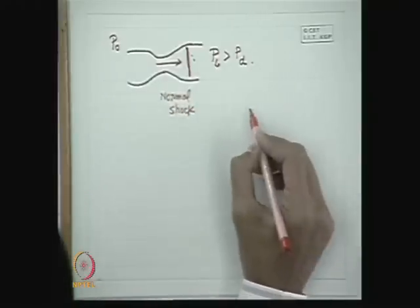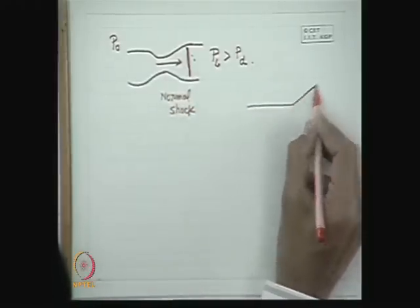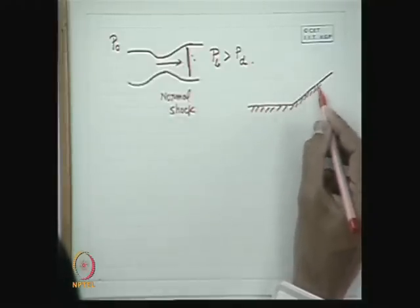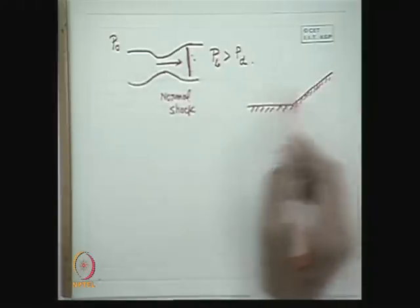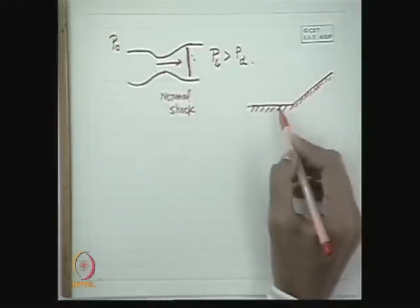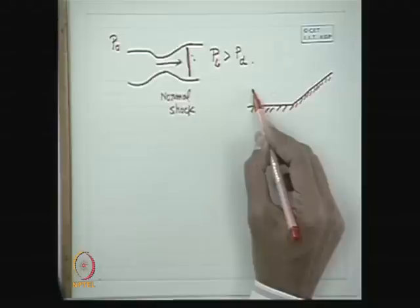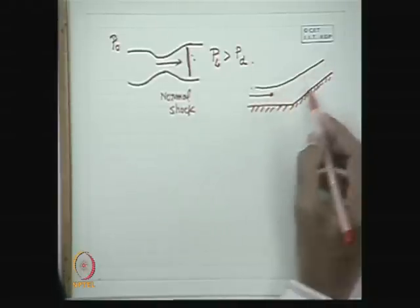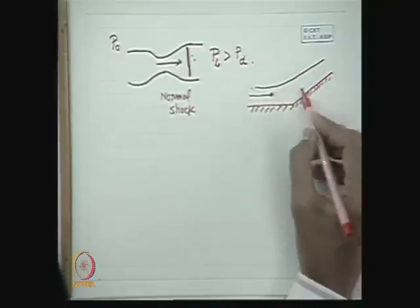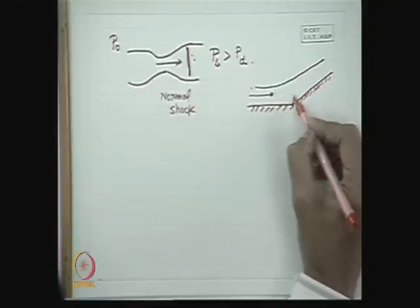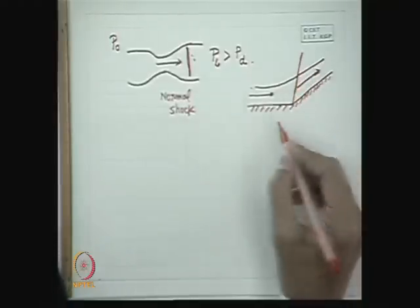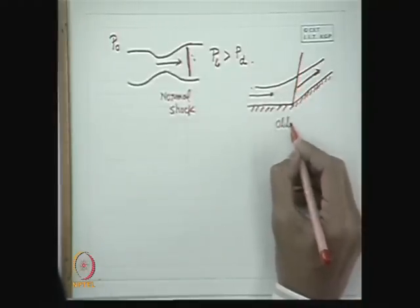Similarly, an oblique shock can occur in flow past a body or past a surface. Consider streamlines flowing in a given direction — an oblique shock may occur where the shock front is oblique to the direction of flow. That is an oblique shock.